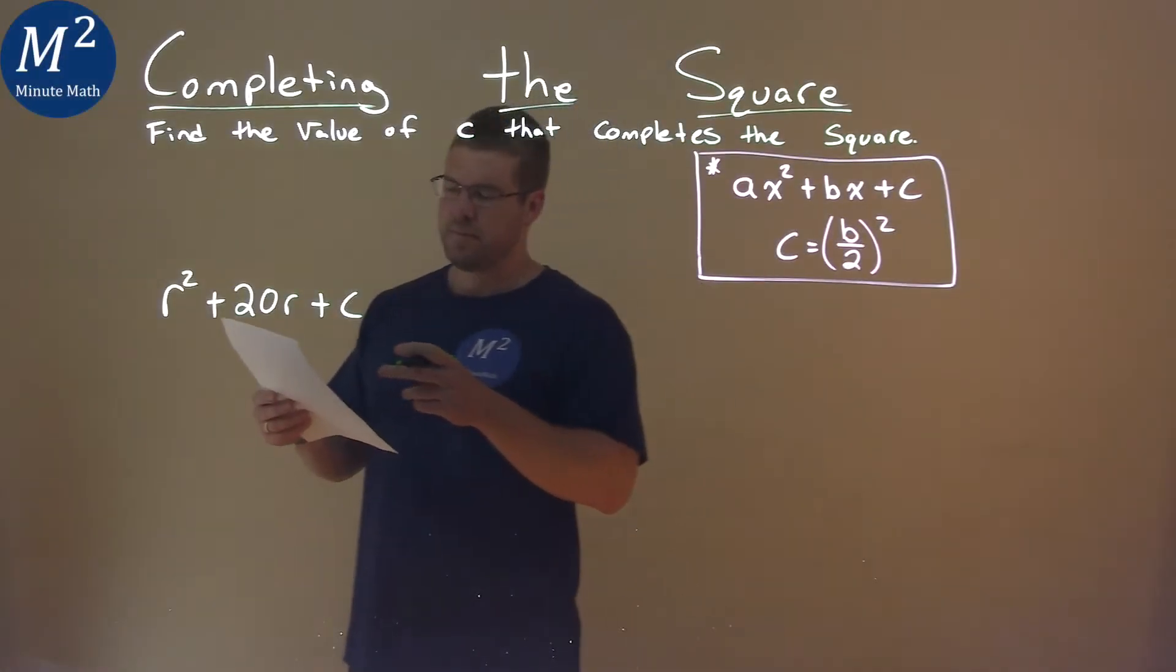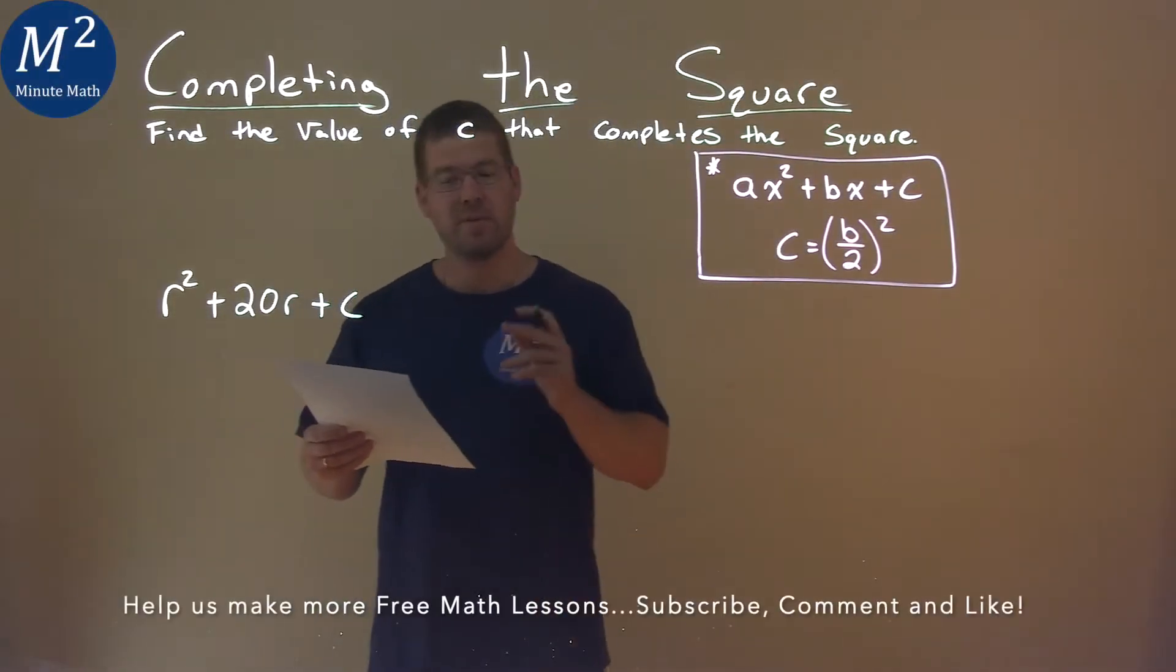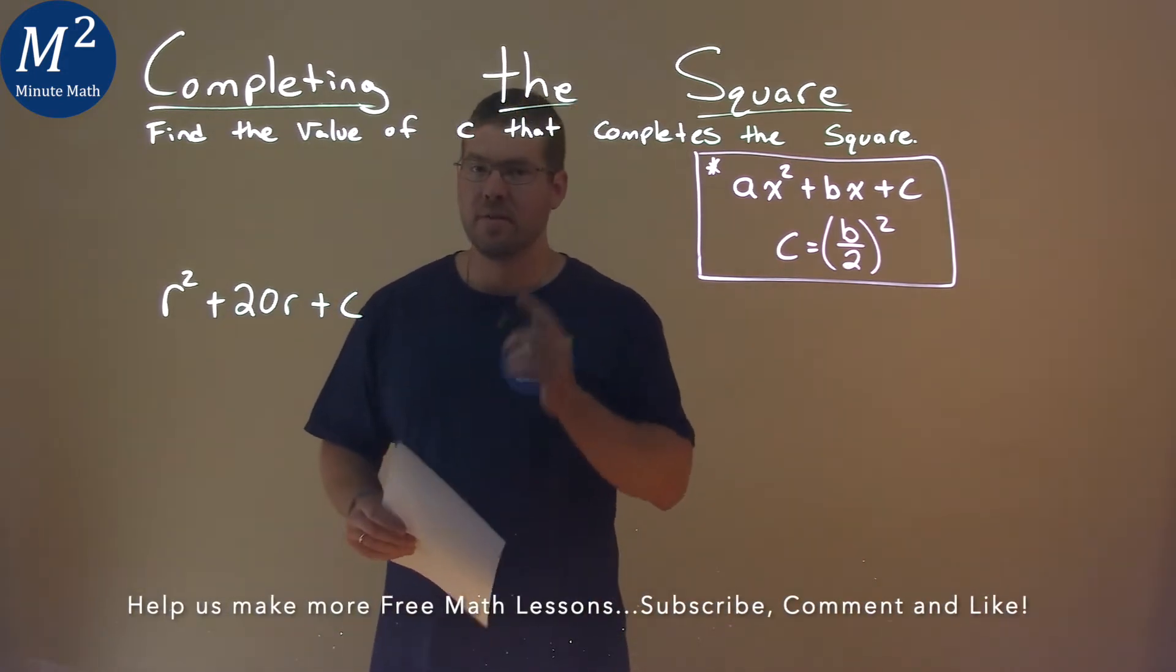We're given this problem right here, r squared plus 20r plus c, and we need to find the value of c that completes the square.